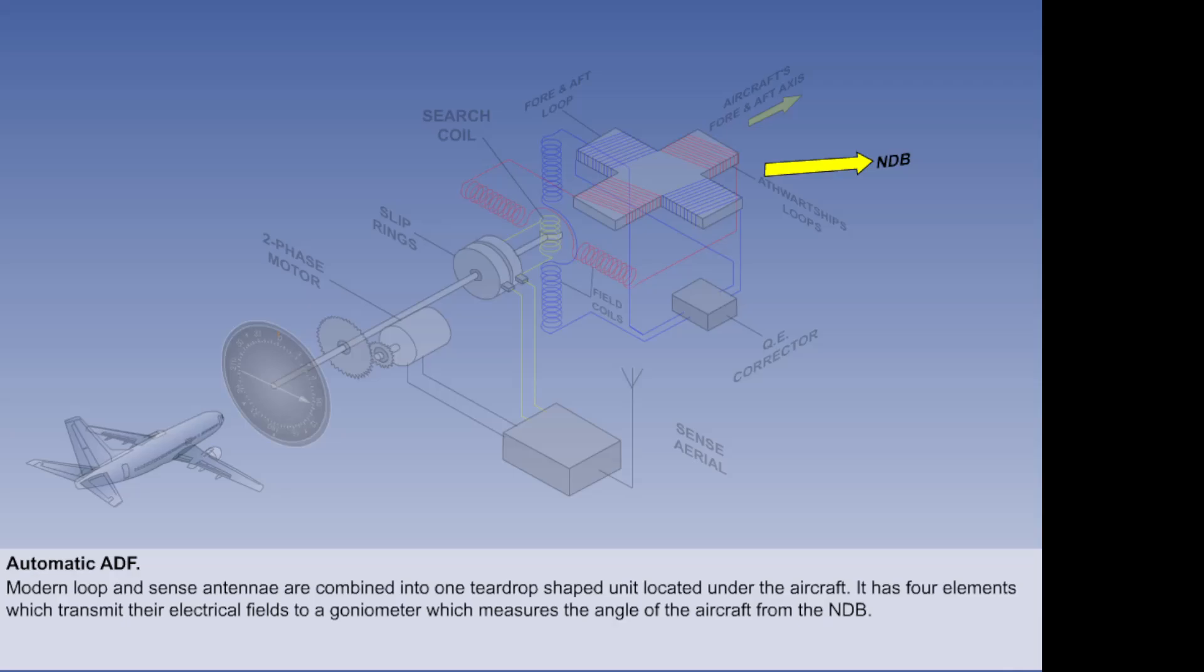If the search coil is not exactly in the null position, because the aircraft is changing its angle to the NDB, a voltage will be generated in the search coil, which is applied to a motor, which rotates the search coil until it is in the null position.